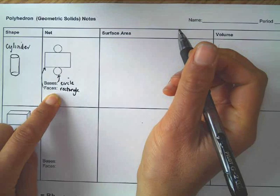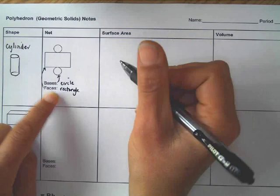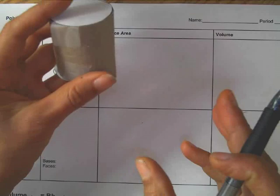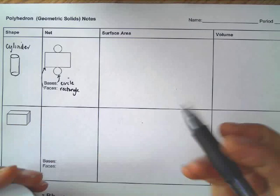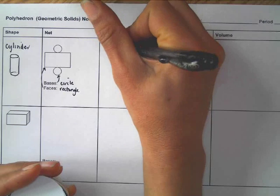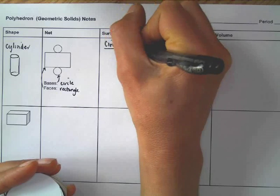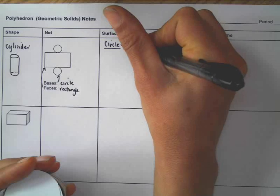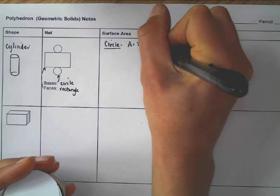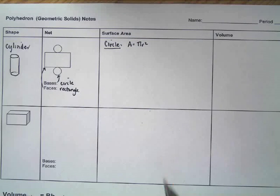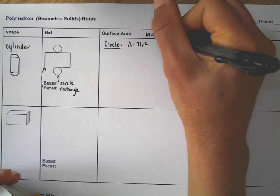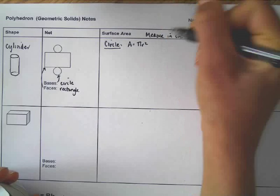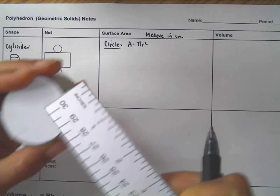Now in order to calculate the surface area, I'm going to first start with the circle. This is the cylinder that I'm going to be using. I'm going to first start with the base. When I'm setting my work up, I'm going to write any important formulas. So the area of a circle is pi r squared. All of our measurements are going to be in centimeters.